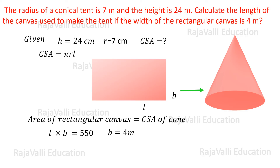Now, bringing the value of b — which is given in the problem as b = 4 meters — to the right side, we get L = 550 / 4, which equals 137.5 meters. This is the length of the rectangular canvas, which is what the question asked for. So this is the answer. Thank you.